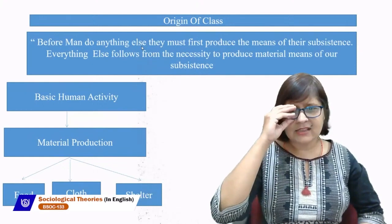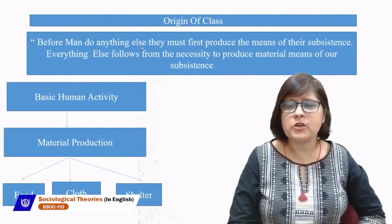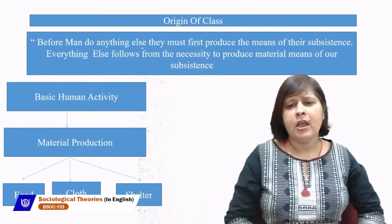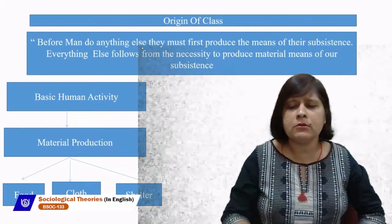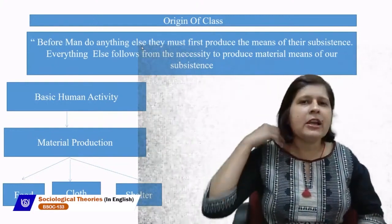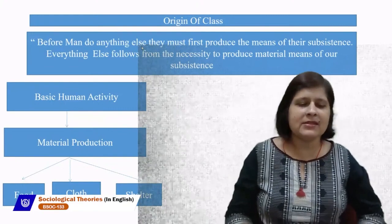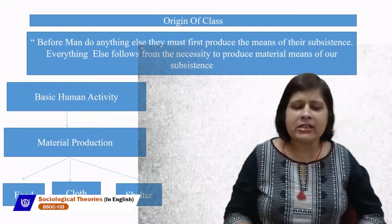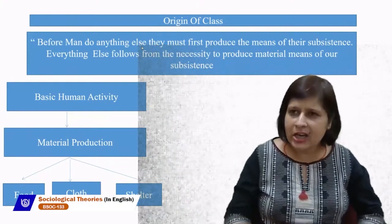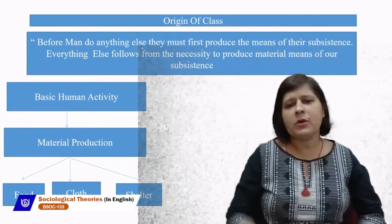Before men do anything else, they must first produce the means of their subsistence. Everything else follows from the necessity to produce material means of subsistence. The basic human activity according to Marx is material production. What we need for survival are our basic needs — food, cloth and shelter. We must produce food, cloth and shelter. These are required for survival and these material productions are responsible for the origin of classes.